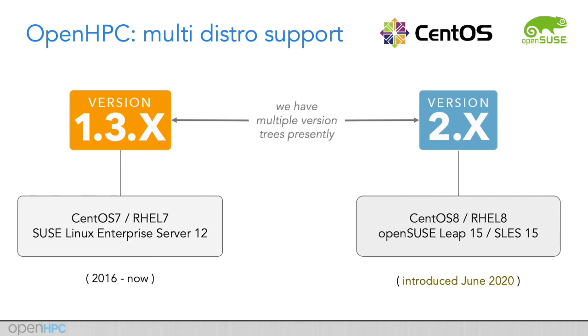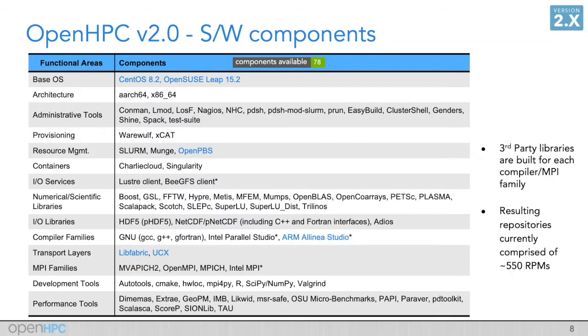CentOS 7 or SLES 12 users would be sticking with the 1.3 branch, while CentOS 8 or OpenSUSE Leap 15 users would be using the newer 2.x version.